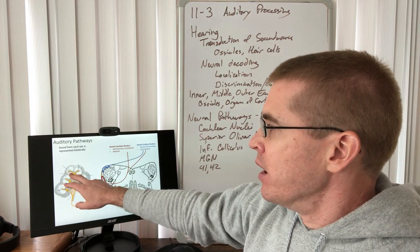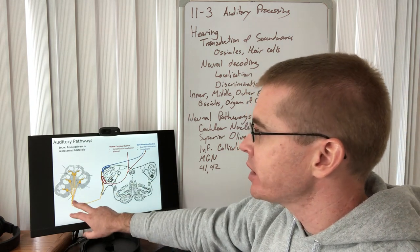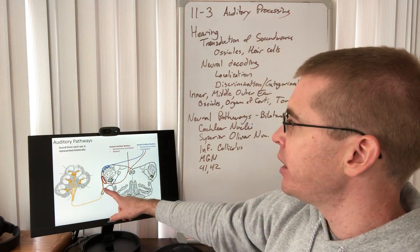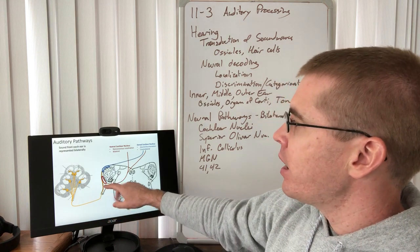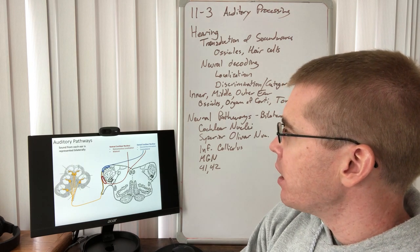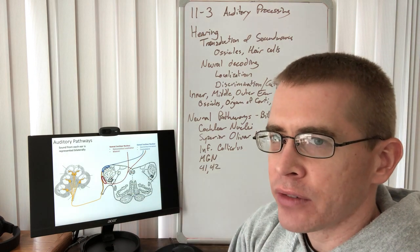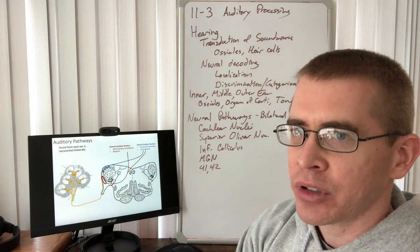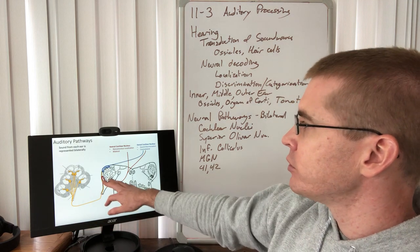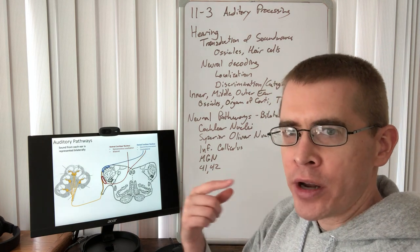The spiral ganglia have peripheral processes going to the hair cells in the organ of Corti, and central processes forming the cochlear portion of the vestibulocochlear cranial nerve 8. These enter the brainstem and synapse on the cochlear nuclei. There is a ventral and a dorsal cochlear nucleus, each with different functionalities — processing different types of information from the hair cells. The ventral cochlear nucleus is responsible for localizing sound from one ear or the other.